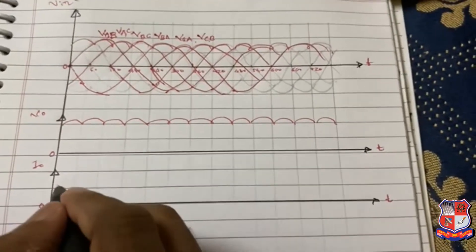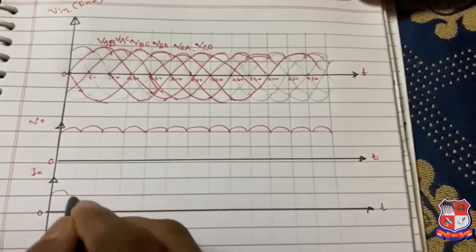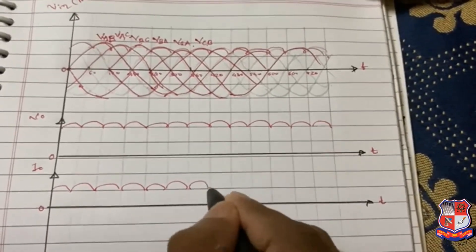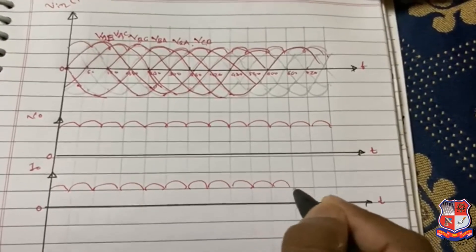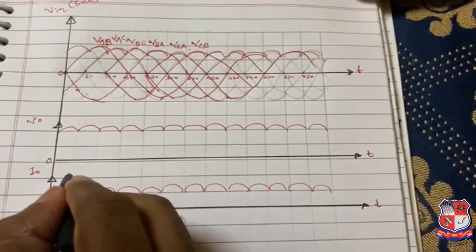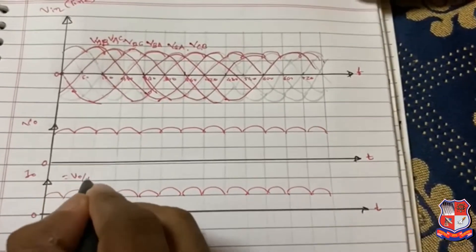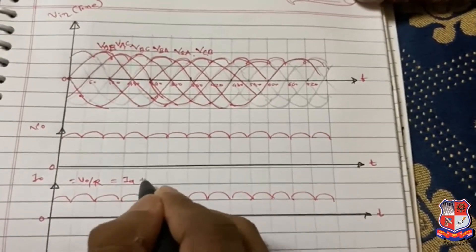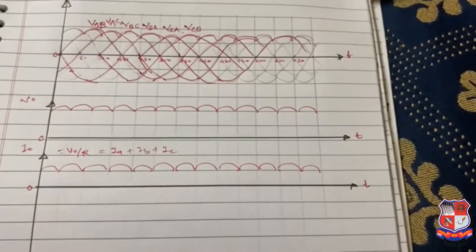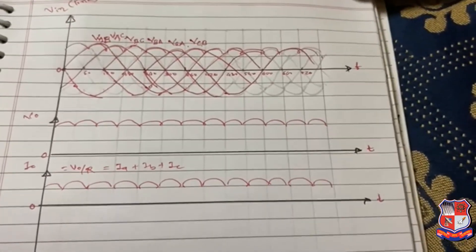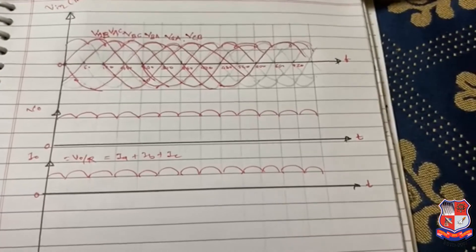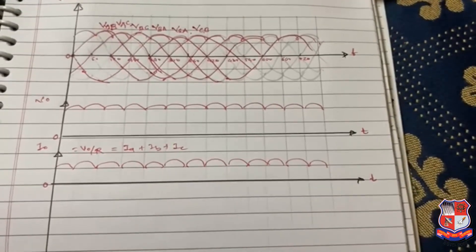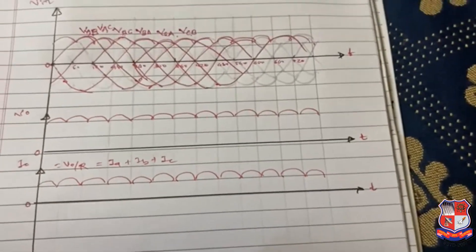Now output current is equal to V0 by R, or Ia plus Ib plus Ic. So this is our output voltage and output current waveform for the particular three-phase rectifier.